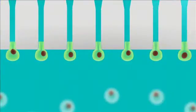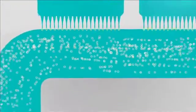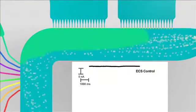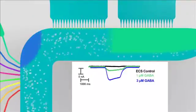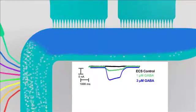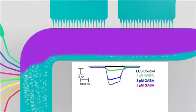After recordings are established, up to eight different compounds or concentrations can be applied to the cells in rapid succession. The fast compound addition makes the system suitable for both ligand and voltage-gated channels.